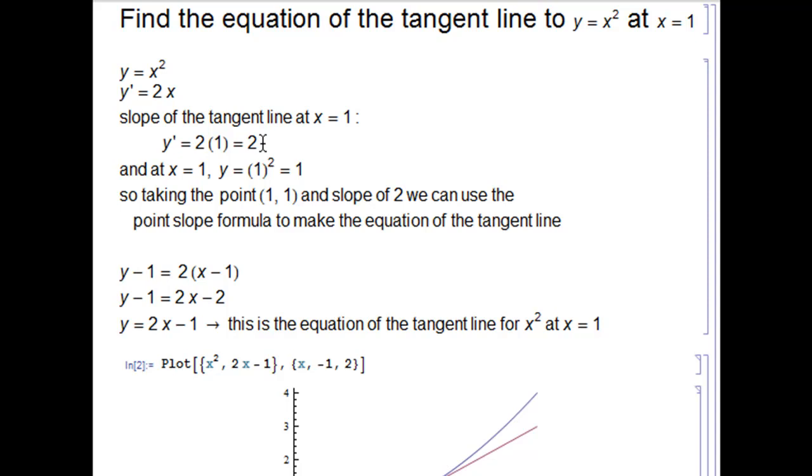We also need the y-value of the original function at x = 1. Plugging in 1 gives y = 1. So we have the point (1, 1) and a slope of 2. We can use the point-slope formula to make the equation of this tangent line.